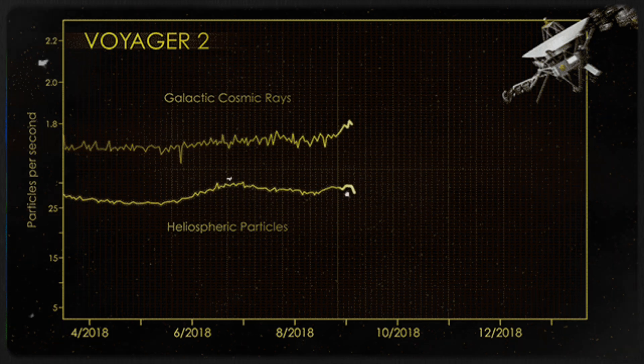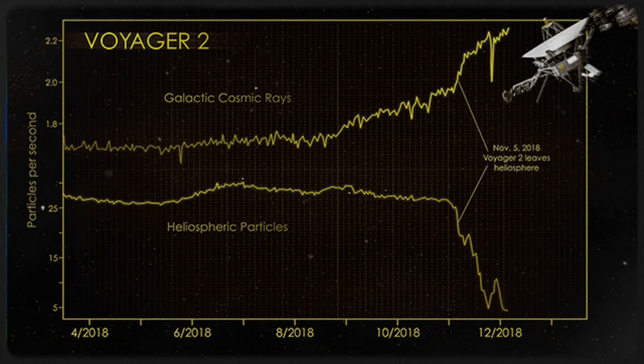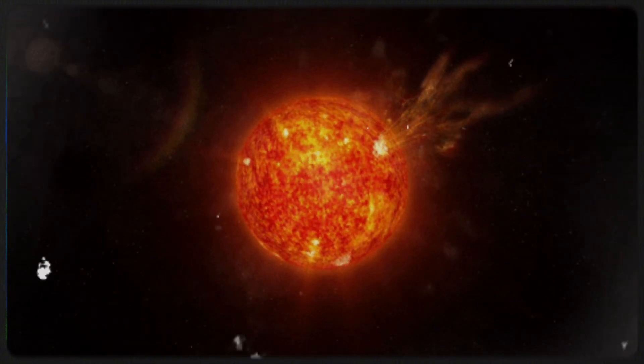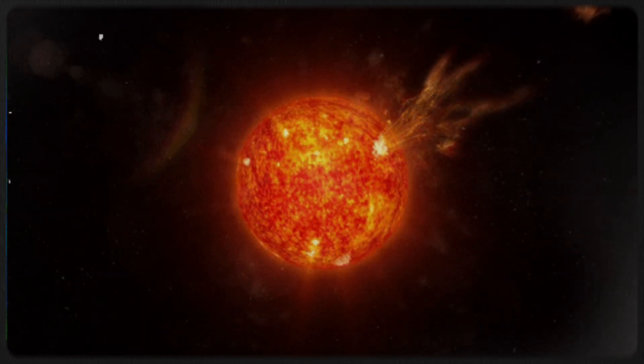Voyager data is prompting theorists to develop more complex models of the interaction between the heliosphere and interstellar environments. The prevailing theory is that our Sun has moved from a hot, ionized region of the galaxy into a patchy, partially ionized area.